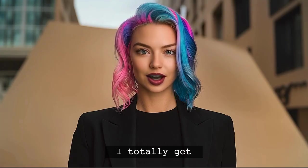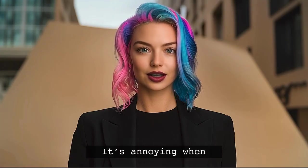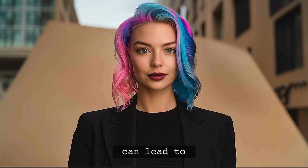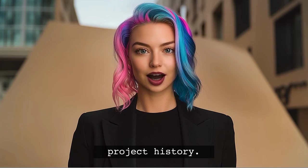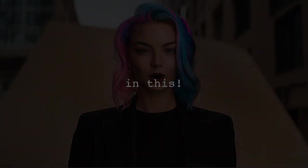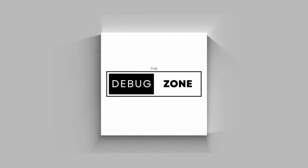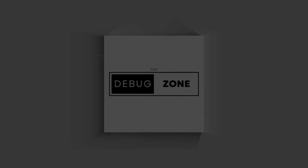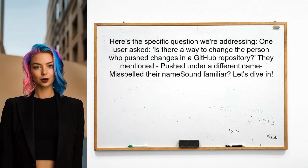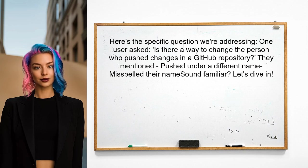It's annoying when a simple typo can lead to confusion in your project history. Many developers face this issue, and it's completely understandable. Here's the specific question we're addressing: one user asked, is there a way to change the person who pushed changes in a GitHub repository? They mentioned that they pushed to their private repository under a different name and misspelled it. Let's dive into how we can fix this.